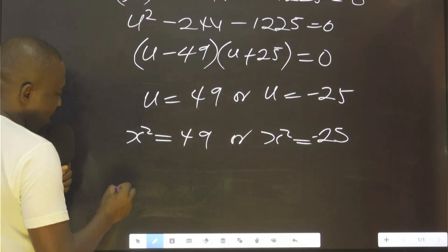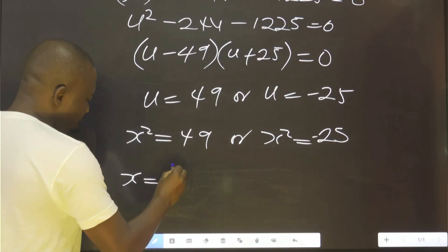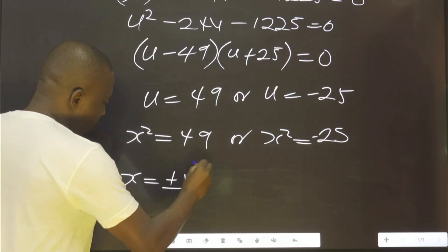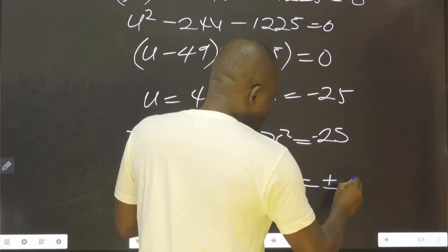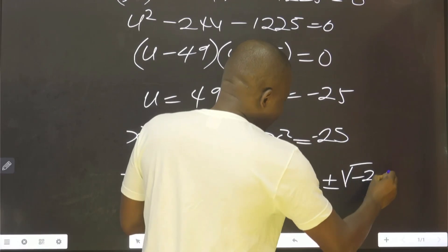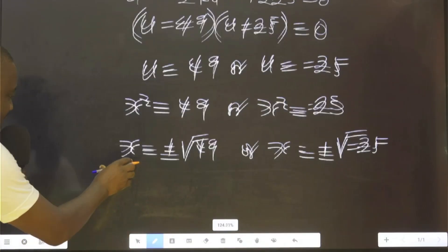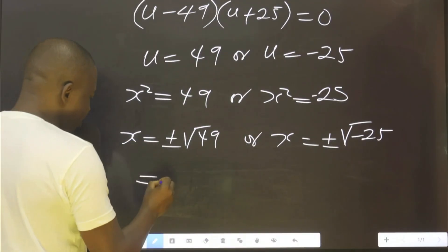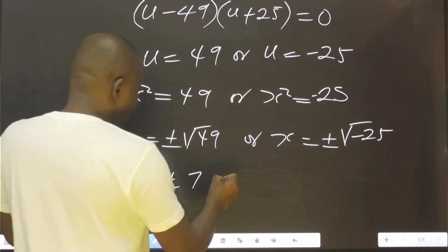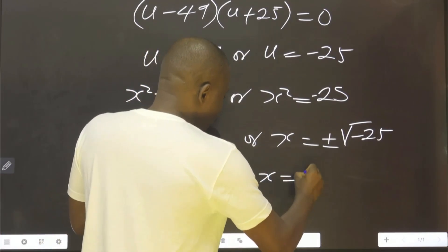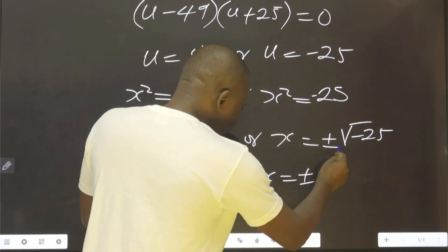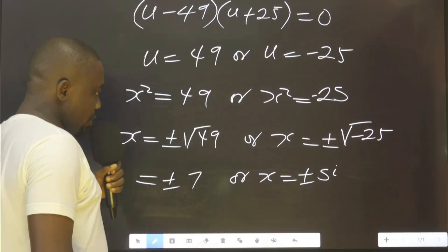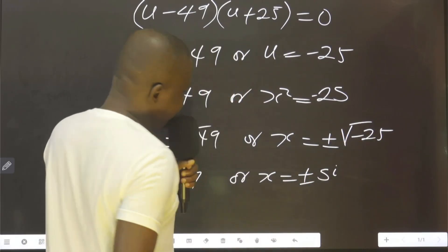Then to get x, x equals to ±√49 or x equals to ±√(-25). You agree with me that this will give us x = ±7 or x = ±5i. This i is the imaginary unit because this is negative.